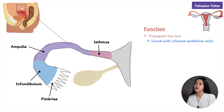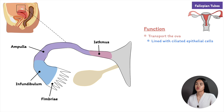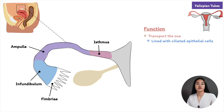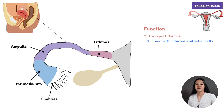If the egg is fertilized in the tube, it will be transported to the uterus for implantation — the blastocyst usually implants in the main body of the uterus. A form of permanent contraception is tubal ligation or tubal sterilization, which seals off the tube and interrupts its function. This is commonly referred to as getting your tubes tied.